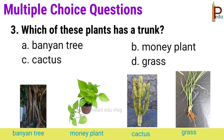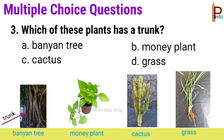Third one: which of these plants has a trunk? Children, look at the pictures shown here. Banyan tree has a trunk. So the answer is banyan tree.